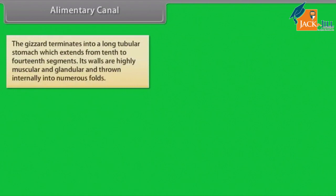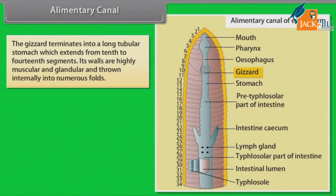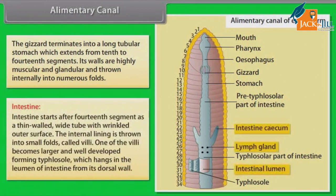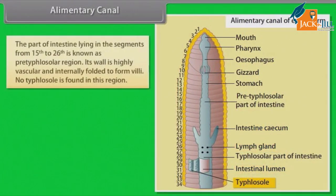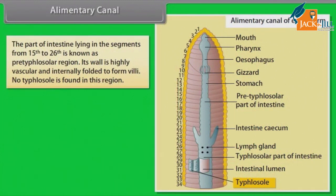The gizzard terminates into a long tubular stomach, which extends from the tenth to the fourteenth segment. Its walls are highly muscular and glandular, and thrown internally into numerous folds. The intestine starts after the fourteenth segment as a thin-walled, white tube with a wrinkled outer surface. The internal lining is thrown into small folds called villi. One of the villi becomes larger and well developed, forming the typhlosole, which hangs in the lumen of the intestine from its dorsal wall. The part of intestine in segments 15 to 26 is known as the pre-typhlosolar region.